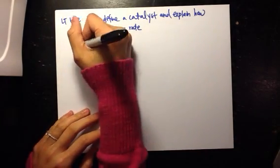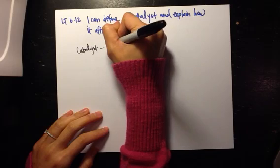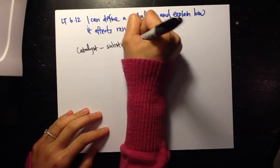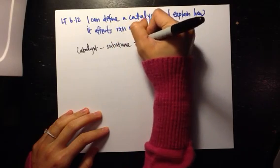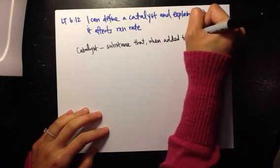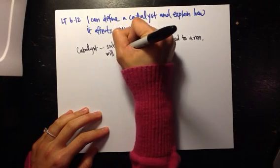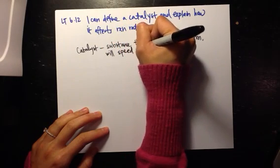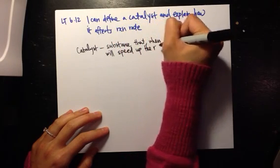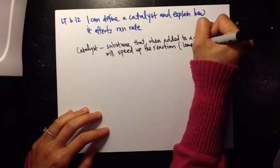So let's go ahead and define a catalyst. A catalyst is a substance that when added to a reaction will speed up the reaction. That's called lowering activation energy.